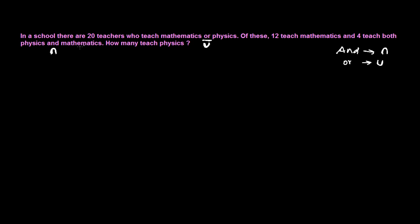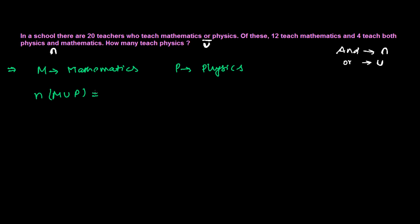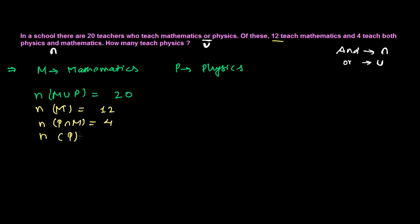From the given information, first you have to write that information properly. When I write M, I am talking about mathematics, and when I write P, I am talking about physics. So the total number of M union P is 20. The number of teachers teaching mathematics is 12. And the number of teachers teaching both physics and mathematics — that is, M intersection P — is 4. We need to find how many teachers are teaching physics.